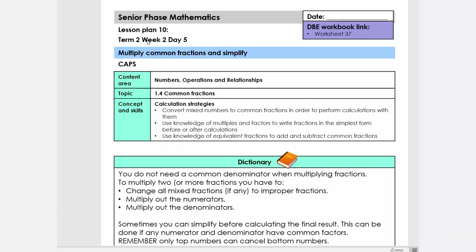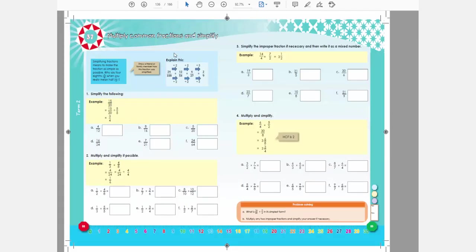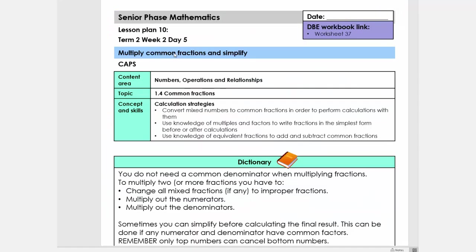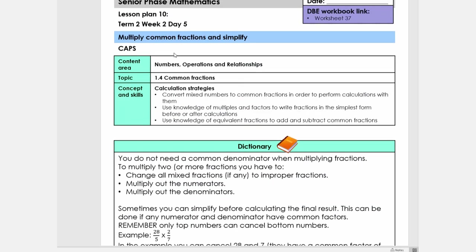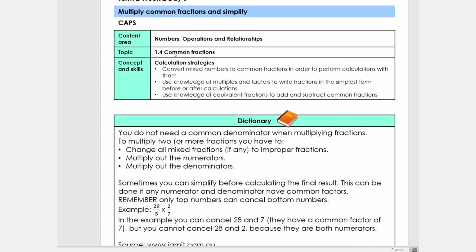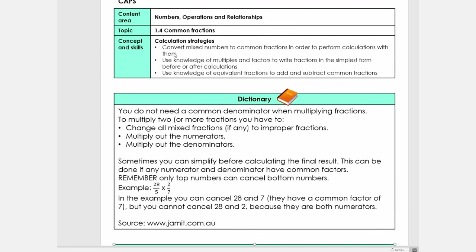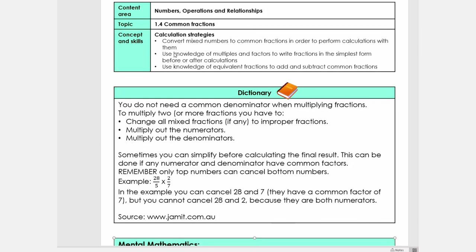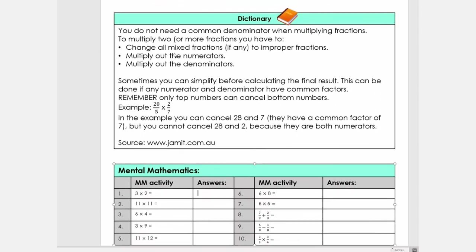Good day, today we're going to do lesson plan 10, grade 7, term 2. The topic is multiply common fractions and simplify. It links to DBE worksheet number 37. This is the link to the CAPS curriculum, and here again, parents and teachers, go through the dictionary part so you can have some background knowledge if you need to support your child.